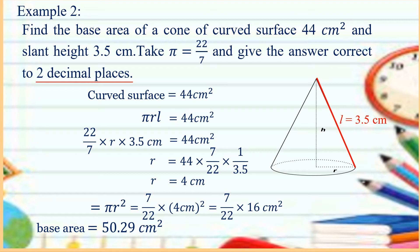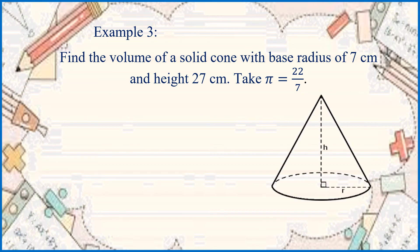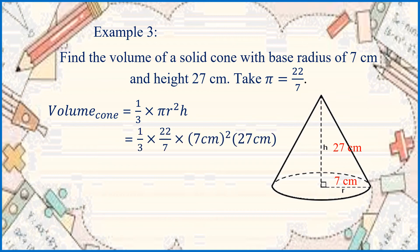That is example number 2. Now let us have example number 3. Find the volume of a solid cone with base radius 7 cm and height 27 cm. Take pi is equal to 22 over 7. The height is 27 cm and the radius is 7 cm. Using the volume formula, 1 over 3 times pi R squared H, we substitute: 1 over 3 times 22 over 7 times 7 cm squared times 27 cm.